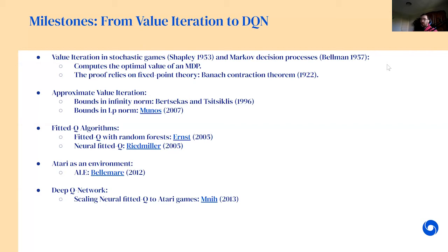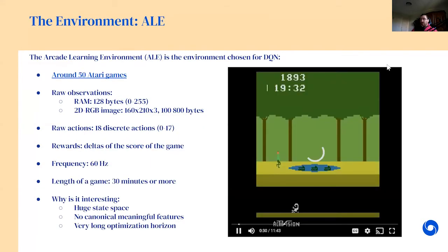DQN is essentially a fitted Q algorithm with added acting. What made DQN such a seminal paper was not really the algorithm itself but how it scales. To verify if an algorithm can scale, you need an environment to prove it. That environment was built in 2012 — the Atari environment — made by Marc Bellemare. Just one year after that environment was created, DQN was applied to it with very nice results.